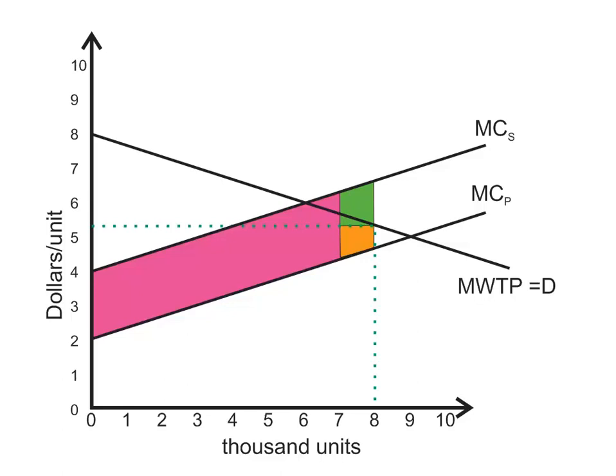But again, what the sufferers would be willing to pay, that green area, is larger than the orange area, so another deal can be made. And as you can imagine, we could continue to go through this process until we get back to the efficient allocation of 6,000 units.